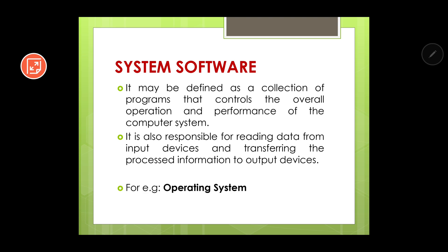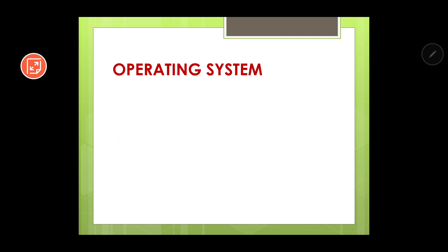The main system software used in a computer is known as the operating system. Now let us discuss the operating system in a little more detail. Before going to the technical aspect of the operating system, let us try to understand it with the help of a simple example.